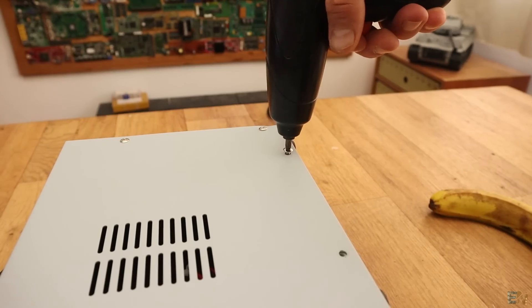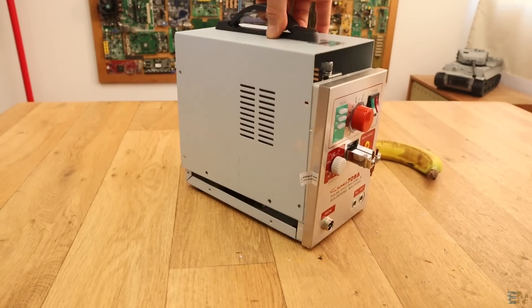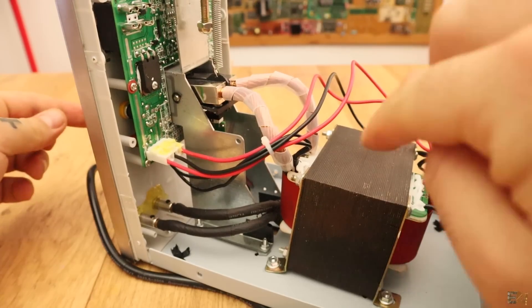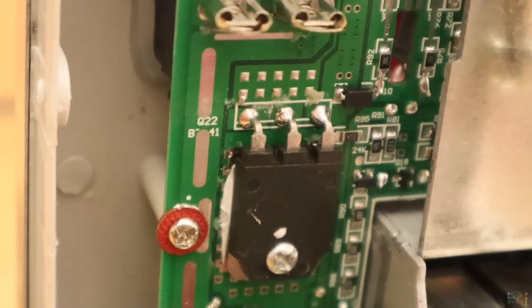I've also made a teardown, but there is nothing special inside. Just the electrodes mechanism, a huge transformer and the main board to control the power, the pulses and the soldering iron.